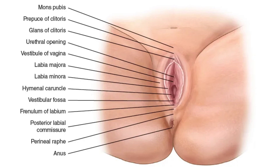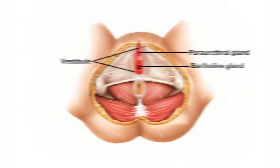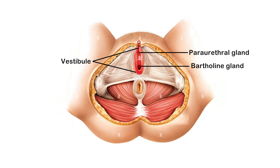The vestibule is a triangular area between the labia minora, laterally from the clitoris at the apex to the fourchette. It includes four openings: the vaginal opening, urethra, Bartholin's glands, and paraurethral ducts. The paraurethral opening is situated on either side of the urethra, otherwise called Skene's ducts. Bartholin's glands are present on either side of the vagina and secrete mucus to keep the vestibule area moist.